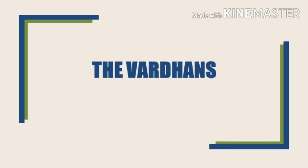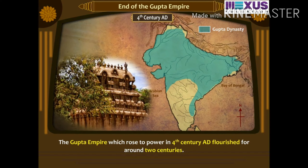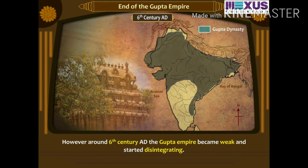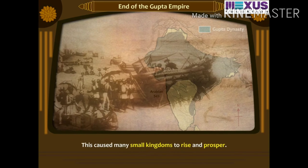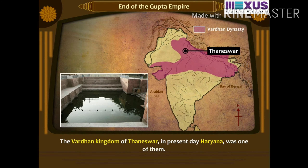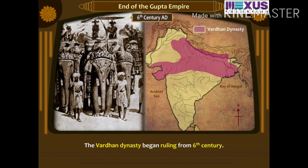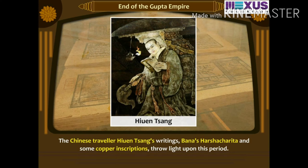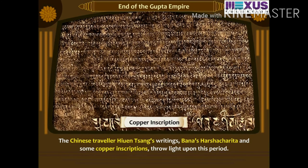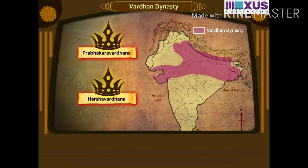The Gupta empire rose to power in the 4th century AD and lasted for around 2 centuries. However, around the 6th century AD, the Gupta empire became weak and started to fall apart, causing many small kingdoms to rise and prosper. The Vardhan kingdom of Thanishwar in present-day Haryana was one of them. The Vardhan dynasty began ruling in the 6th century. The Chinese traveler Xuan Zang, Bana's Harsha Charita, and some copper inscriptions throw light upon this period. The founder of the Vardhan dynasty was Prabhakara Vardana, and one more prominent leader was Harsha Vardana.